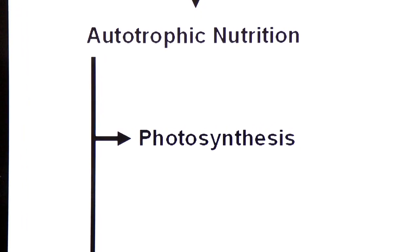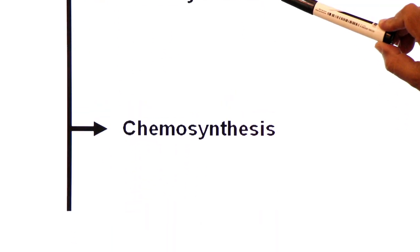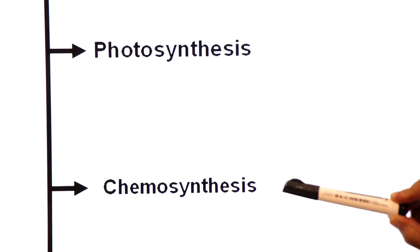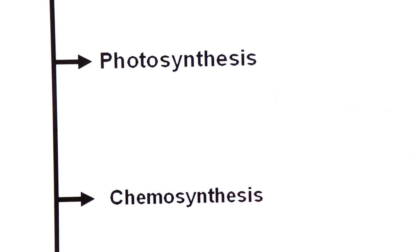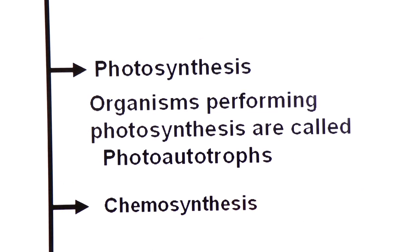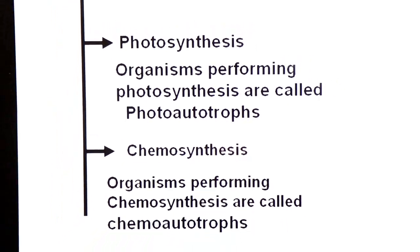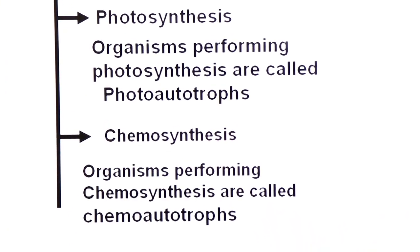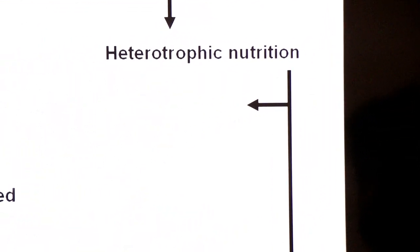Autotrophic nutrition has two types: photosynthesis and chemosynthesis. In photosynthesis, glucose is synthesized using the energy of sunlight. In chemosynthesis, glucose is synthesized using the energy of chemicals. Organisms performing photosynthesis are called photo-autotrophs, and organisms performing chemosynthesis are called chemo-autotrophs.